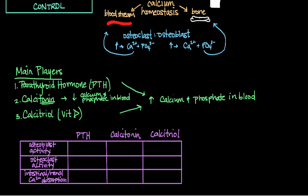First, let's look at osteoblast activity. Recall that osteoblasts build up bone — as their activity increases, you have calcium and phosphate taken from the bloodstream and deposited into bone. Keeping that in mind, and realizing that parathyroid hormone helps to increase calcium and phosphate in the blood by breaking down bone, we would expect osteoblast activity to decrease as parathyroid hormone increases. So PTH decreases osteoblast activity.